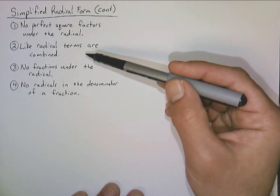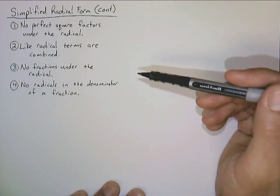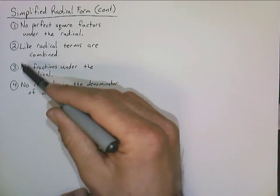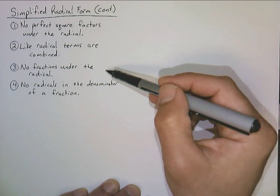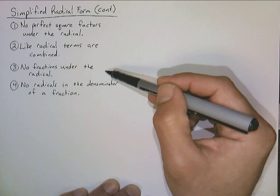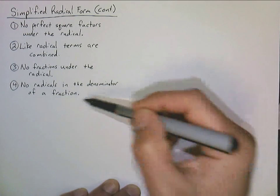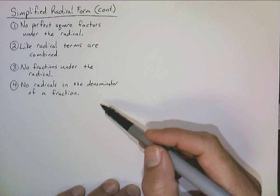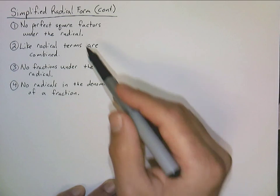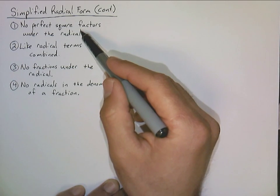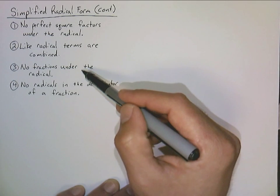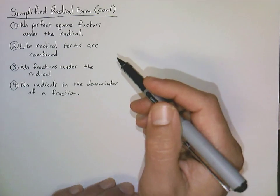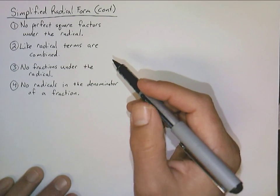Today, we're going to add two more criteria. The third one means we're going to have no fractions underneath the radical. And finally, we can't have any radicals in the denominator of a fraction. For the first two criteria we used the product property. For this third one, we're going to make use of the division property for square roots.